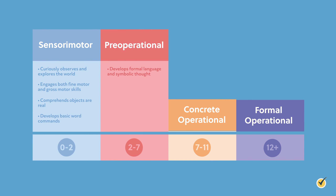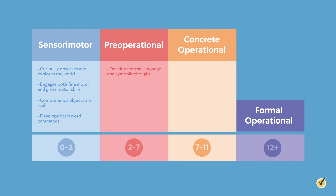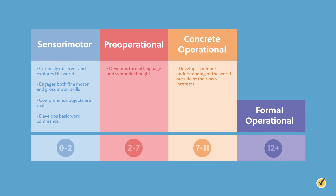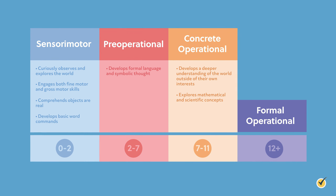Moving on to the third staircase step, a child enters the concrete operational stage between the ages of seven and eleven years old. During this cognitive phase, Piaget theorized children develop a deeper understanding of the world outside of their own interests, as well as explore mathematical and scientific concepts like cause and effect and classification of items. Examples may include grouping objects by characteristics, leveling items by importance, and sequencing events by time.